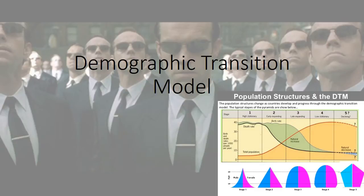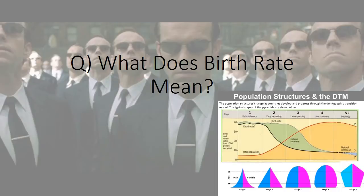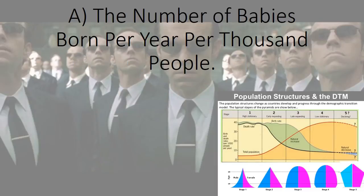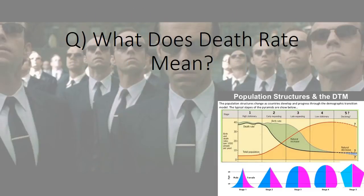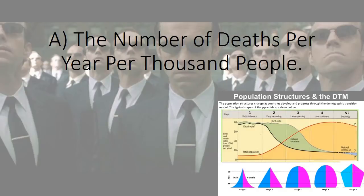Demographic transition model. What does birth rate mean? The number of babies born per year per thousand people. What does death rate mean? The number of deaths per year per thousand people.